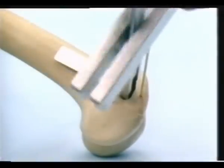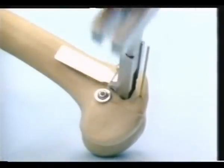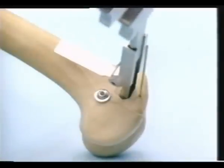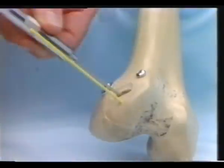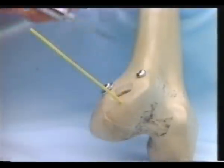Now the seating chisel is removed. The Kirchner wire remains in place and serves as a control when inserting the appropriate plate. For safety reasons, we check the depth with the depth gauge.